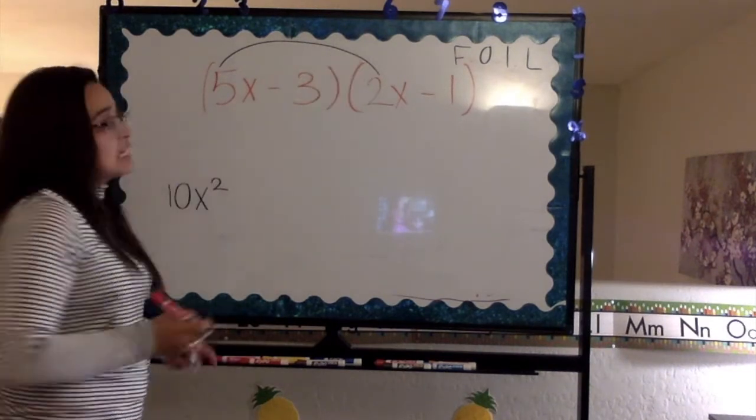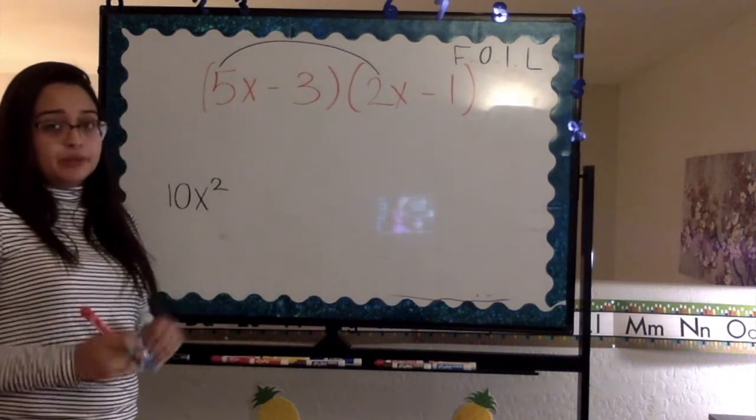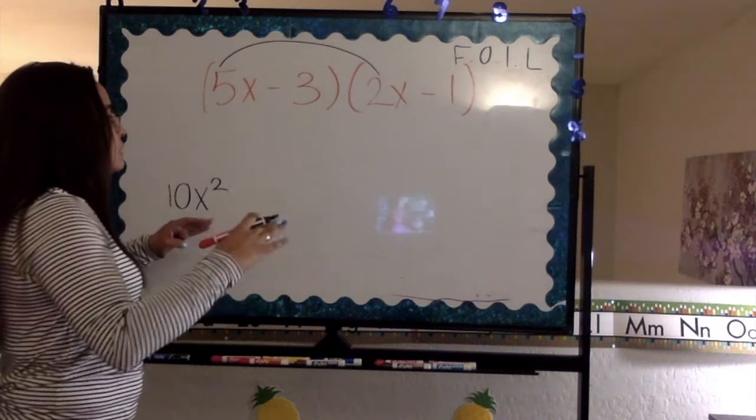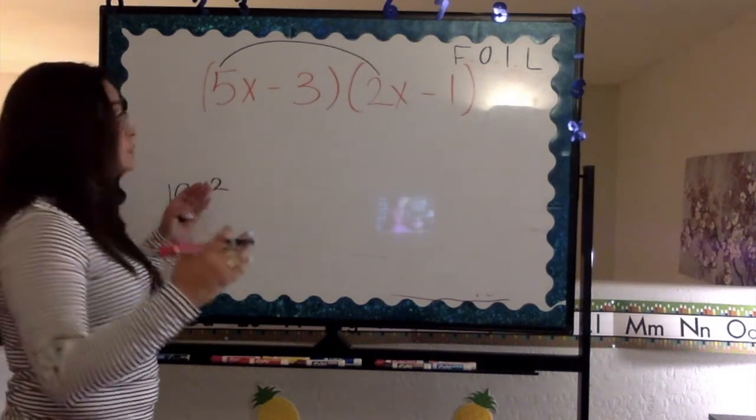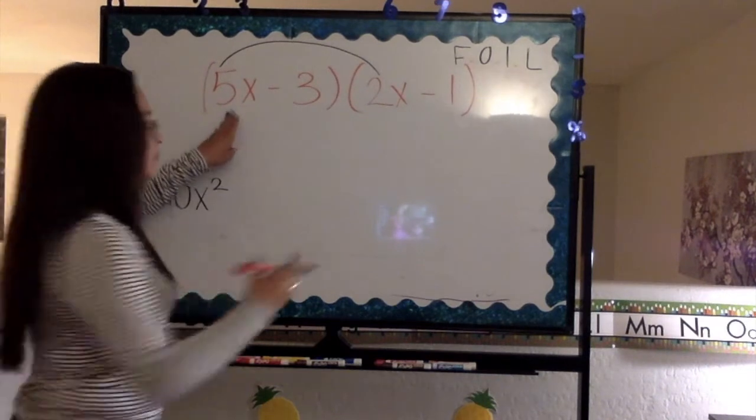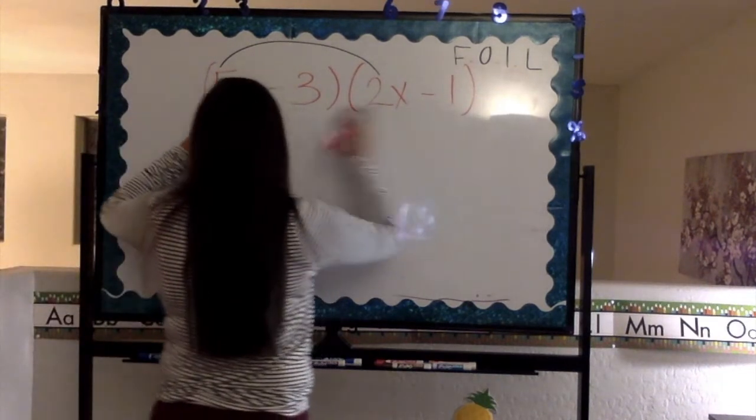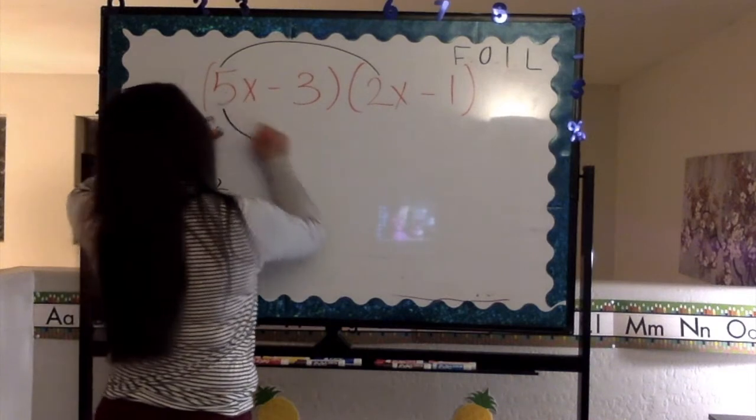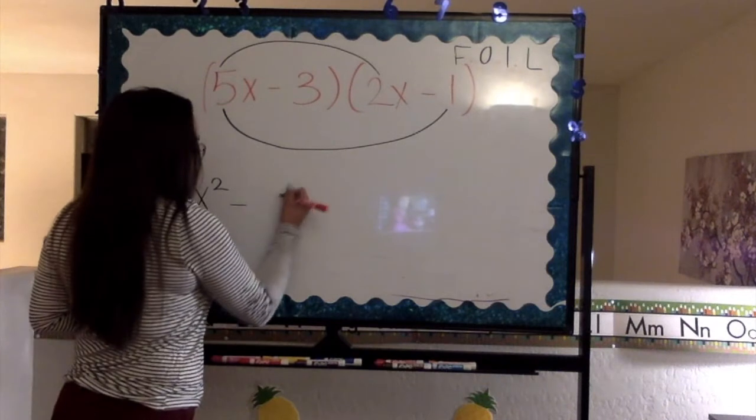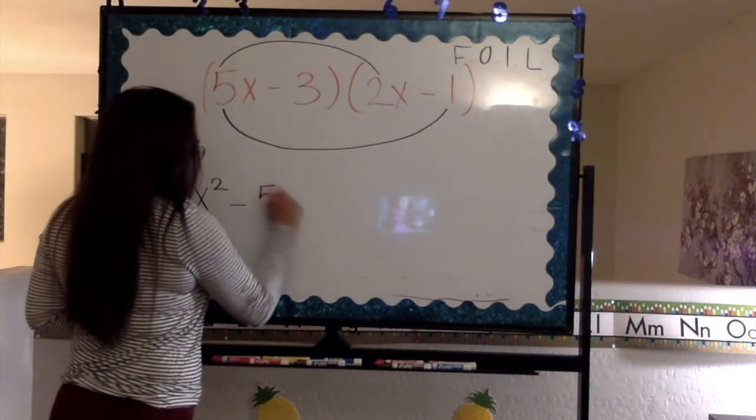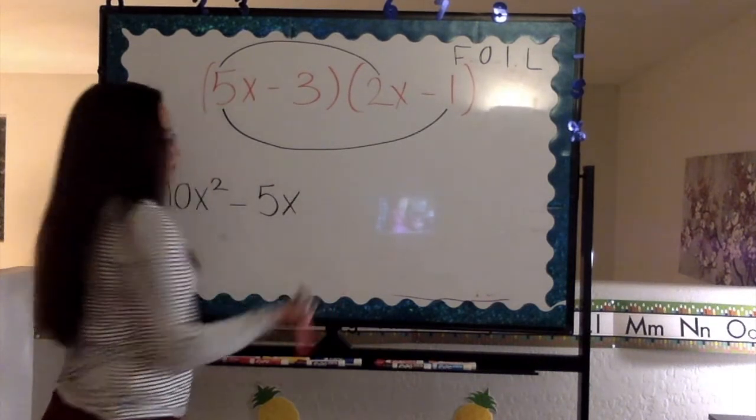O stands for outer. Now we're talking about the numbers that are on the outside of the problems. So we have 5 and we have negative 1. So we're going to multiply 5 times negative 1, which means that will give us negative 5x.